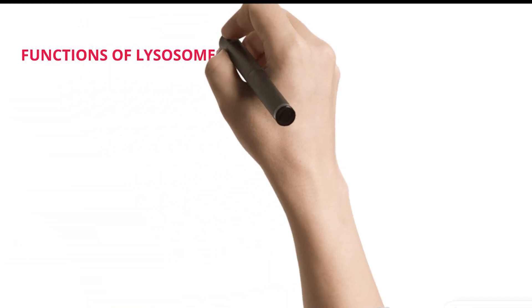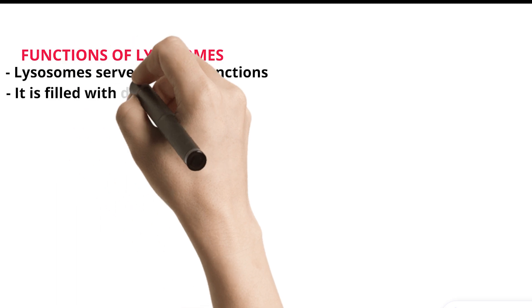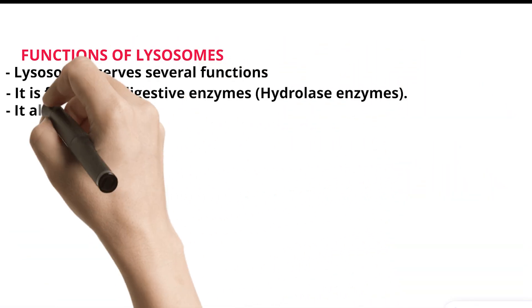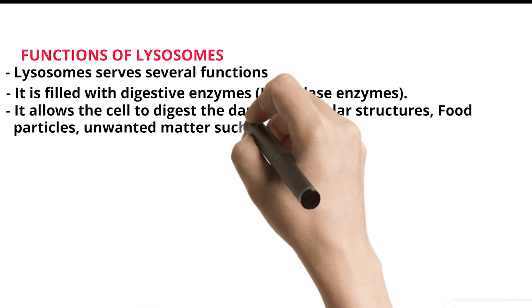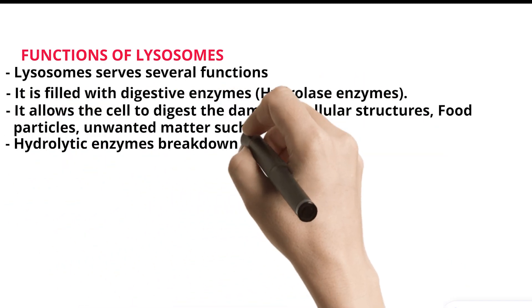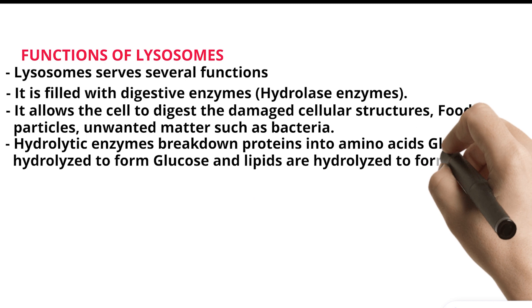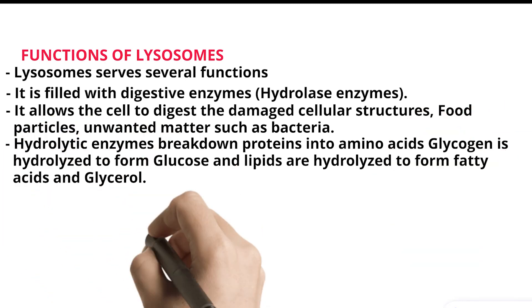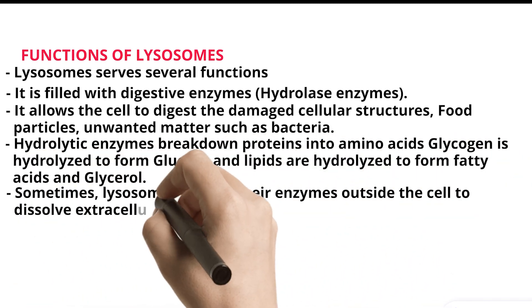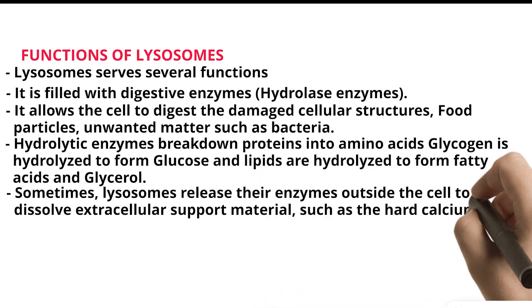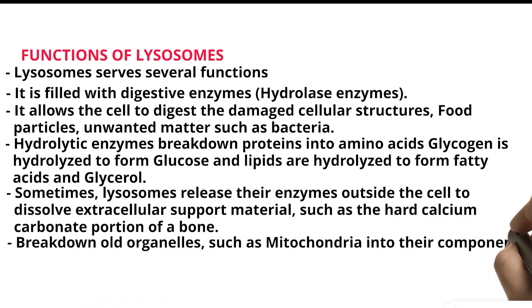Functions of Lysosomes: Lysosomes serve several functions. Filled with hydrolase enzymes, they allow the cell to digest damaged cellular structures, food particles, and unwanted matter such as bacteria. Hydrolytic enzymes break down proteins into amino acids; glycogen is hydrolyzed to form glucose; and lipids are hydrolyzed to form fatty acids and glycerol. Sometimes, lysosomes release their enzymes outside the cell to dissolve extracellular support material, such as the hard calcium carbonate portion of bone. They also break down old organelles, such as mitochondria, into their component molecules.